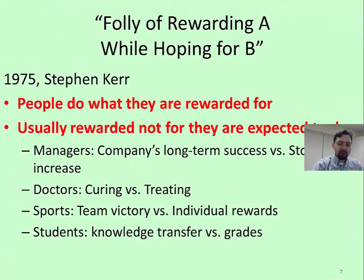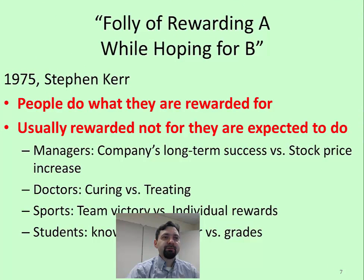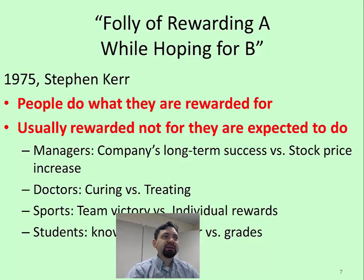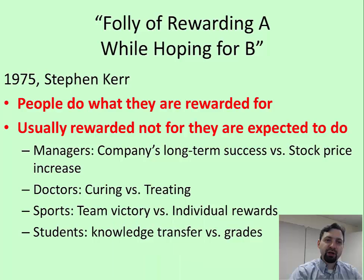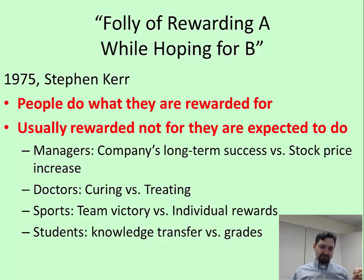One of the biggest challenges was described as far back as 35 years ago. Stephen Kerr was talking about something he called the 'folly of rewarding A while hoping for B.' His article was written almost half a century ago, but it remains as important and relevant today as it ever was. He talked about the problem that many, if not most, people on this planet are compensated — rewarded — for A, while we hope that they will do B. Let me give you a few examples.